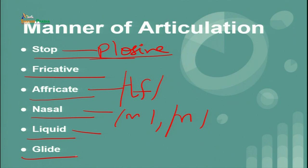Another important concept in the manner of articulation is the glide. A glide is very much similar to a vowel, but it is not a vowel. When you say 'yes,' you feel it is a partial consonant — it does not come under the category of vowel, but it has the texture of a consonant. A glide represents the 'ya' sound as in 'yes,' or the 'wa' sound as in 'wheat' or 'west.'